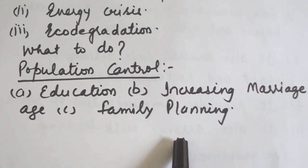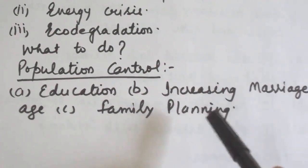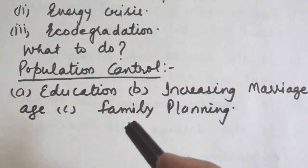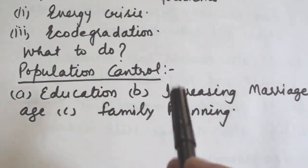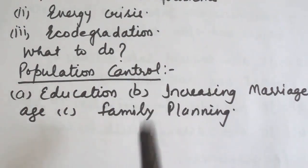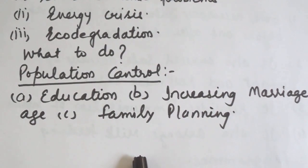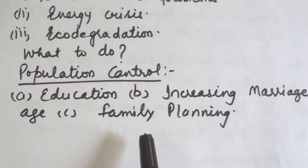In 1976, the government started a tentative program of compulsory sterilization which required one parent to undergo sterilization after a couple had two children. This program was later replaced by a voluntary approach, as people became educated and understood the benefits of a small family. We will discuss more in our next session. Thank you and have a nice day.